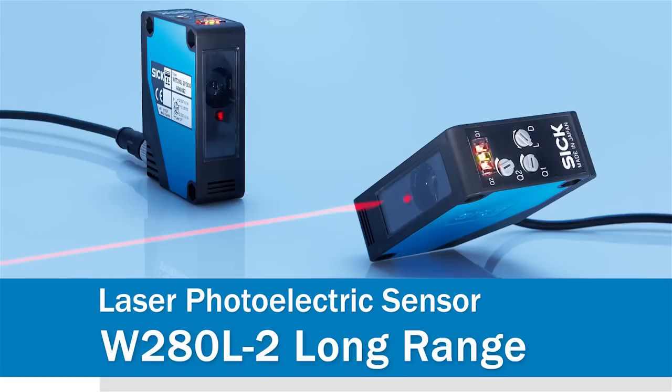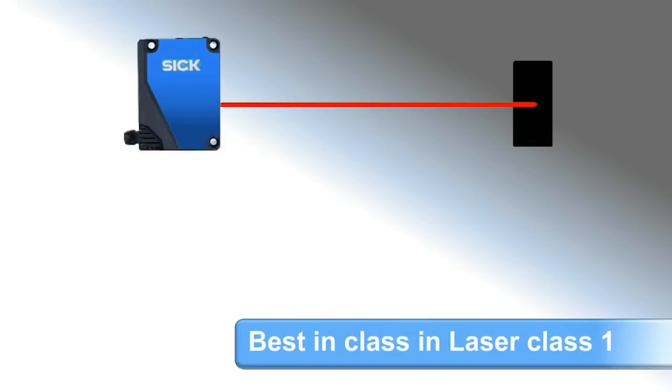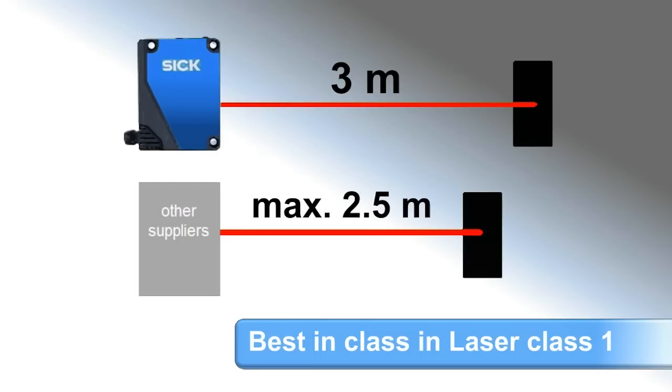W280 Long Range, the new laser sensor. The W280 Long Range can handle the largest of sensing distances, detecting black targets at up to 3 meters, compared to other suppliers who can only reach 2.5.